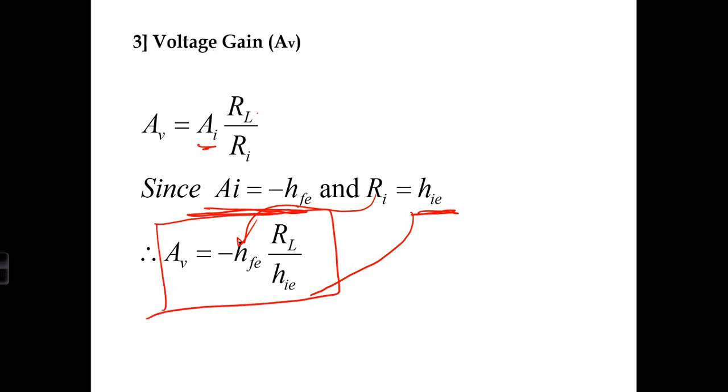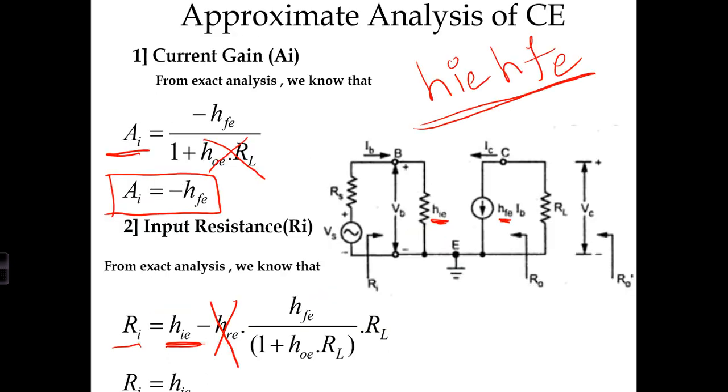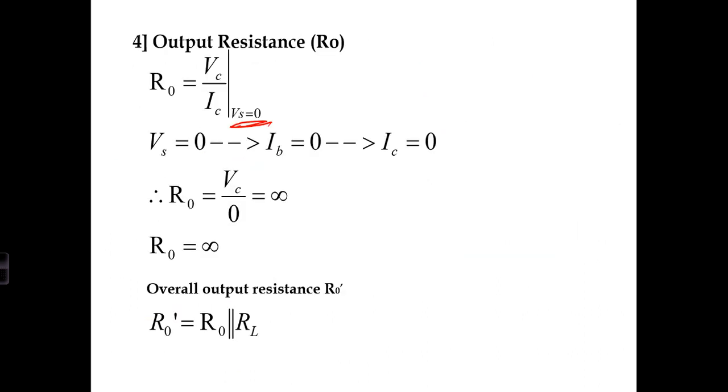The last parameter is output resistance. Output resistance is output voltage divided by output current when input is short-circuited, that is input equals zero. The output voltage is VC here. Earlier we wrote V2, now it's VC. Output current was I2, now it's IC. Same thing, only notations differ. As it is the collector terminal, we write VC and IC.